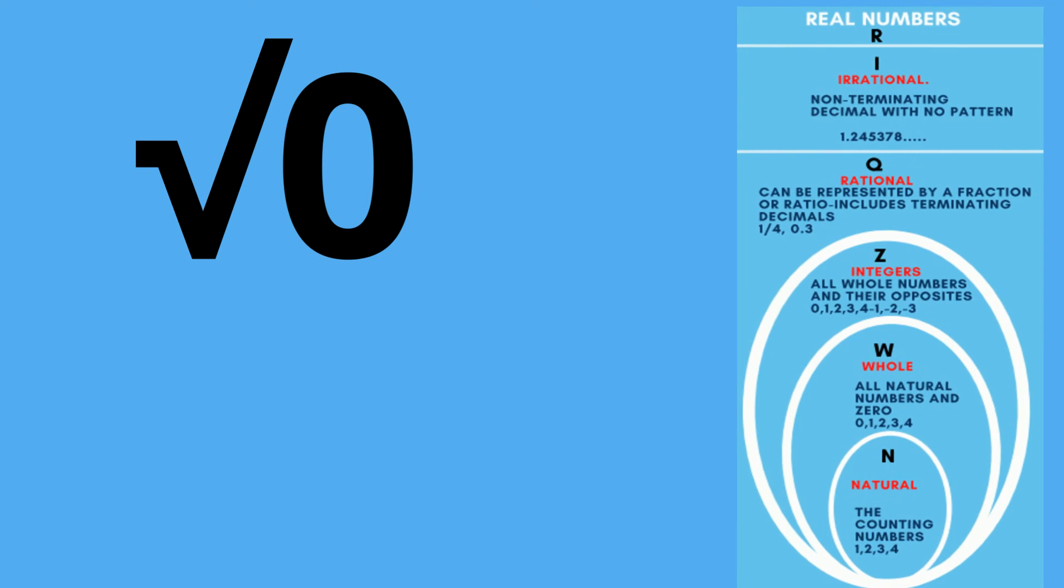Square root of 0. Square root of 0 is 0. So it's going to be a whole number, an integer, a rational number, and a real number. So the square root of 0 is WZQR.